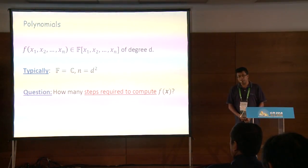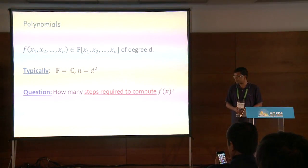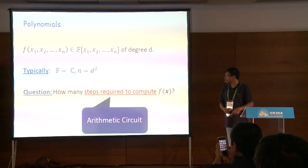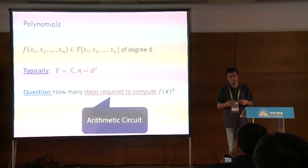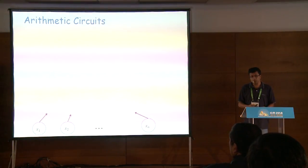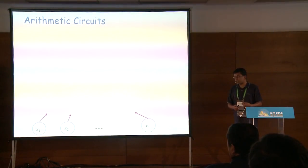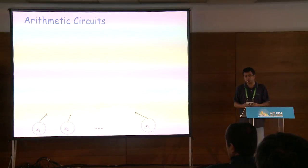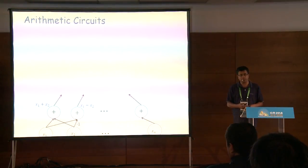The question is: how many steps are required to compute a given polynomial f? We formally define this notion via an arithmetic circuit. You start with inputs x1, x2 through xn — the variables of the polynomial — and you do arithmetic operations. Each arithmetic operation is a basic step of your algorithm.